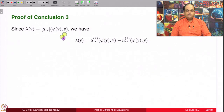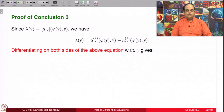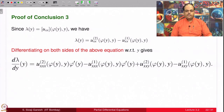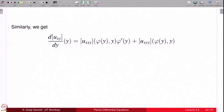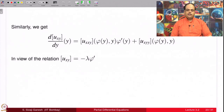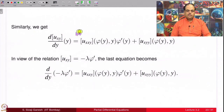Lambda(y) by definition is the jump in u_xx. Differentiating both sides with respect to y gives lambda' expressed in terms of jumps in third-order derivatives: d(lambda)/dy equals [u_xxx]·φ' plus [u_xxy]. Similarly, differentiating the relation [u_xy] = minus lambda·φ' with respect to y yields a relation involving [u_xxy] and [u_xyy]. Using conclusion 1 expressing [u_xy] = minus lambda·φ', we can rewrite these relations accordingly.